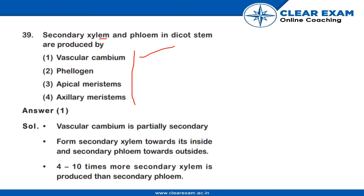Vascular cambium is partially secondary. It produces secondary xylem towards its inside and secondary phloem towards its outside. Notably, 4 to 10 times more secondary xylem is produced than secondary phloem.